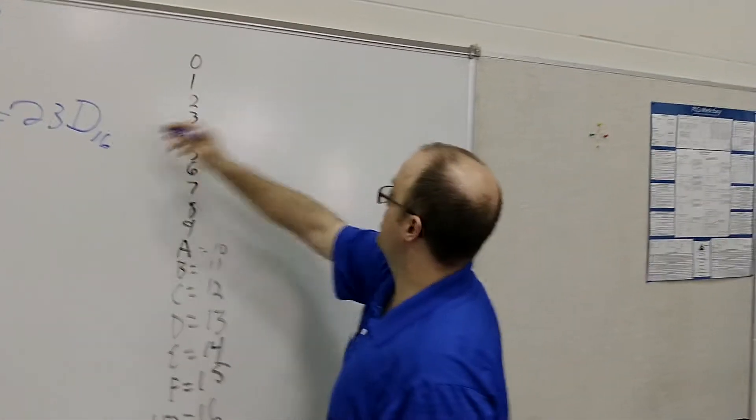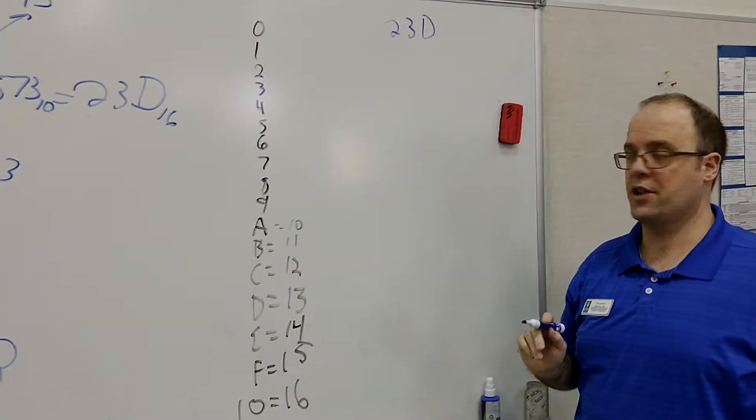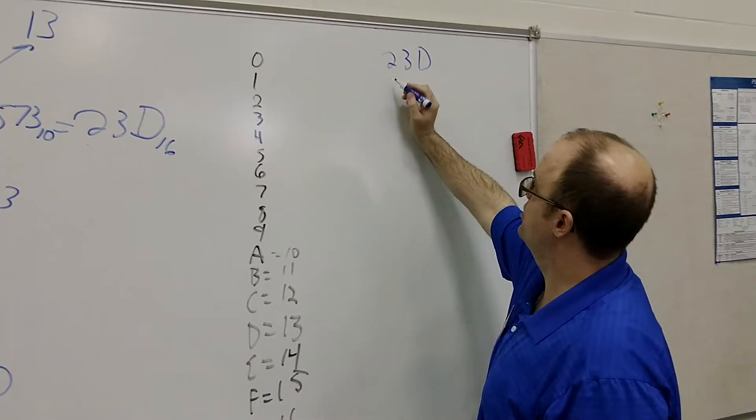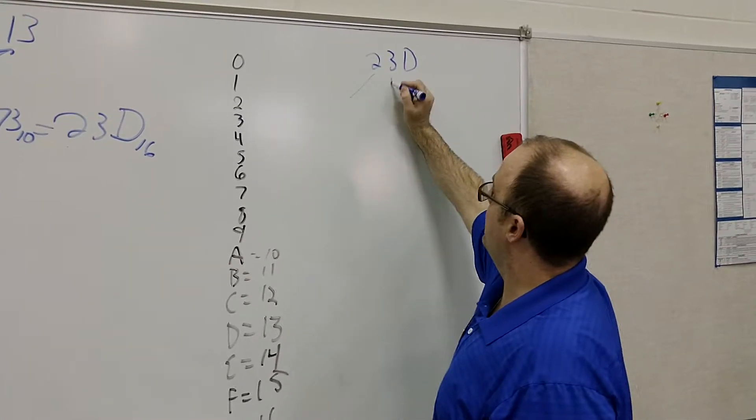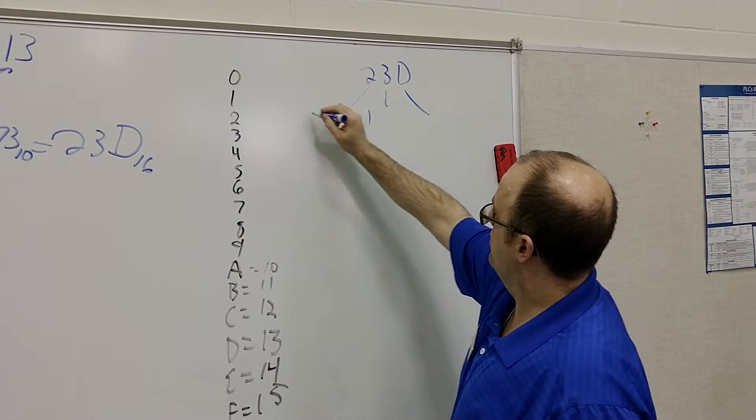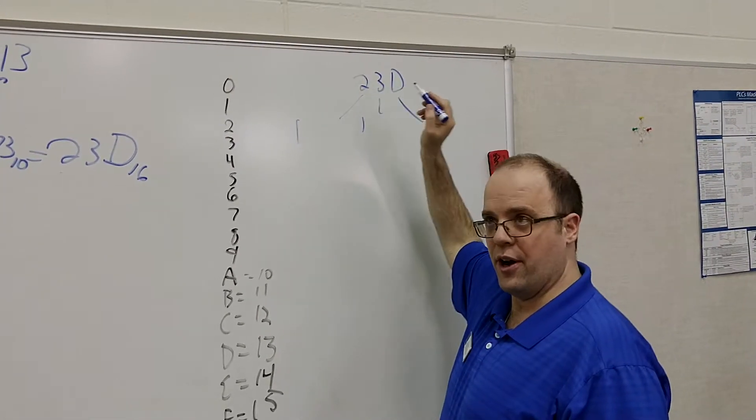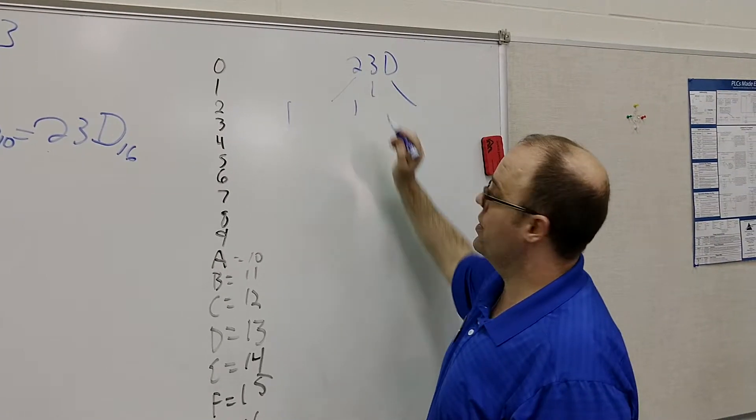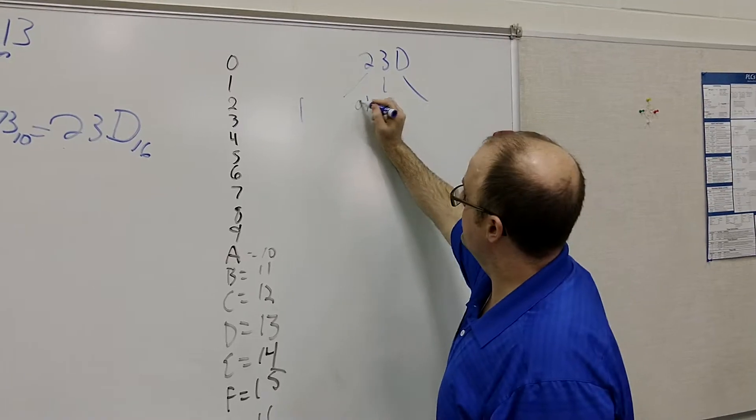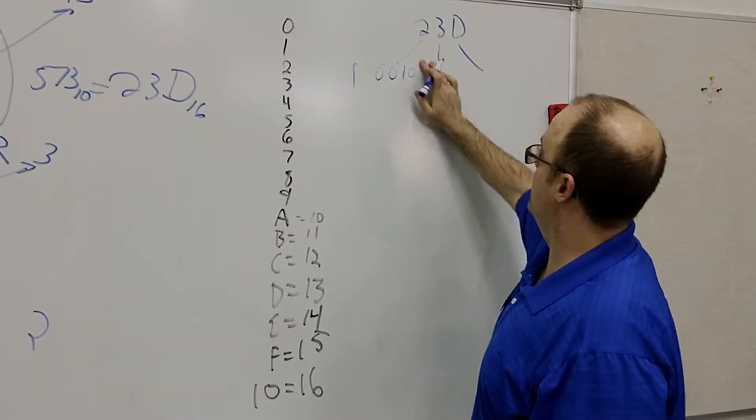So if I want to change this into binary, so I have 23D. Separate this into the 4-bit binary form of 2. And if we know what 2 is, that's going to be 0, 1, just put two digits in front of that. Okay? I'm going to erase this.